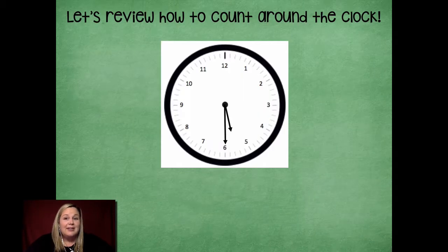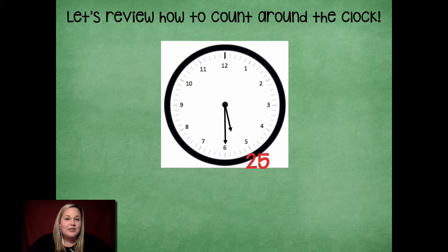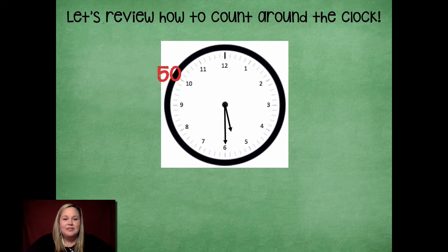First, you're going to review how to count around the clock. Remember, as we're going through, you're starting at zero, which is 12, 5, 10, 15, 20, 25, 30, 35, 40, 45, 50, 55, 60.